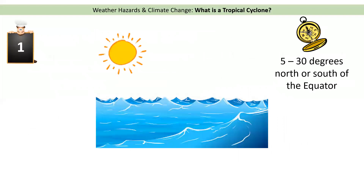Now we need to know in detail how a tropical cyclone forms — there are eight stages. Stage one: we need to be 5 to 30 degrees north or south of the equator. The ocean has been heated up by the sun and therefore reaches 26 degrees — the magic number. Once it hits 26 degrees there's enough heat in the ocean to lead to enough evaporation for storms to form.